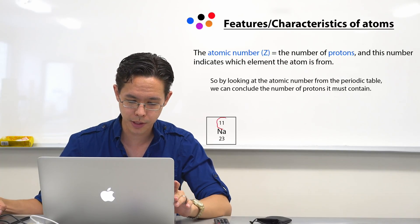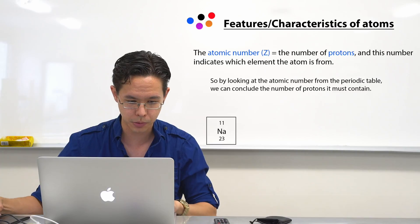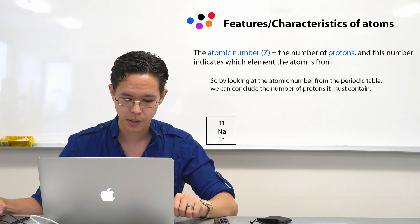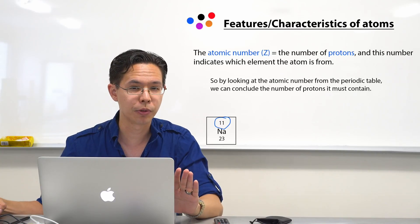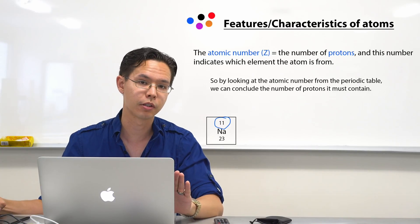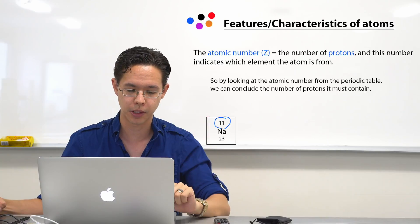You can see that I've got the number 11 at the top. Let me switch that to blue, I just like to color code this. Number 11, that is the atomic number. It is usually the smaller number out of the two values you can find in a particular section of the periodic table.